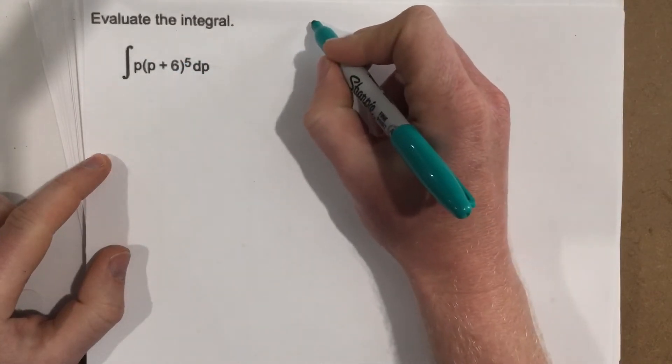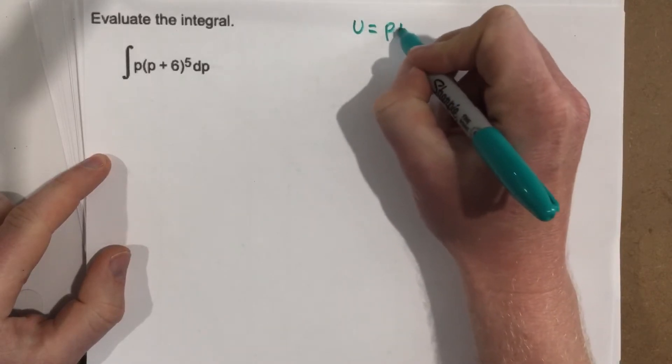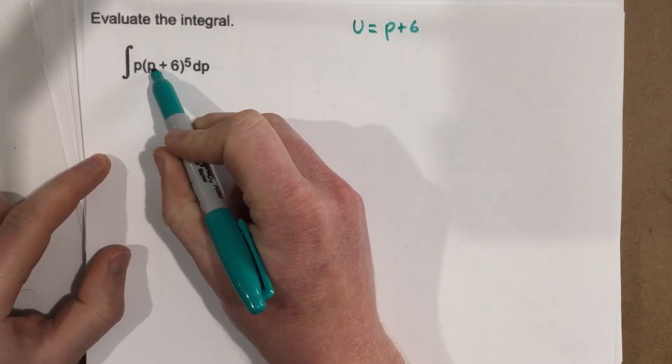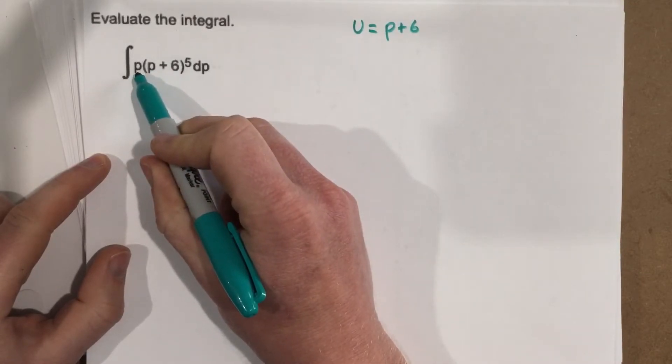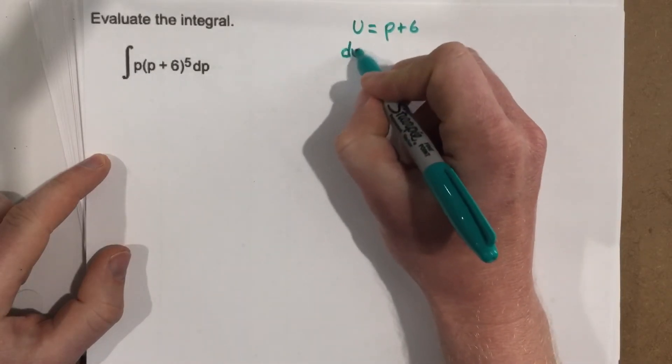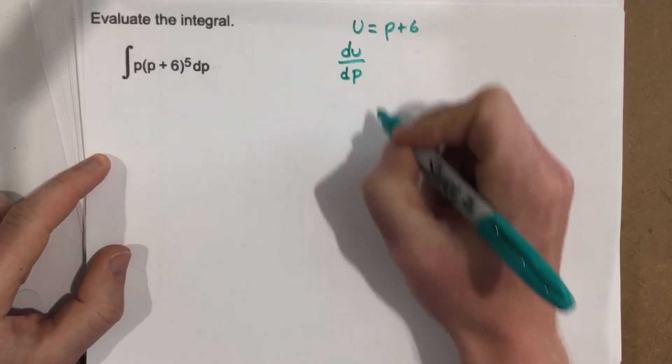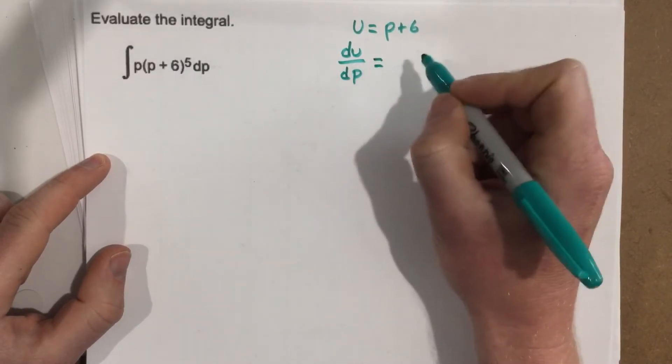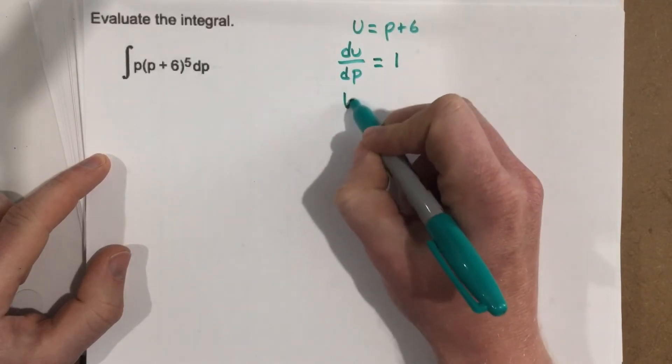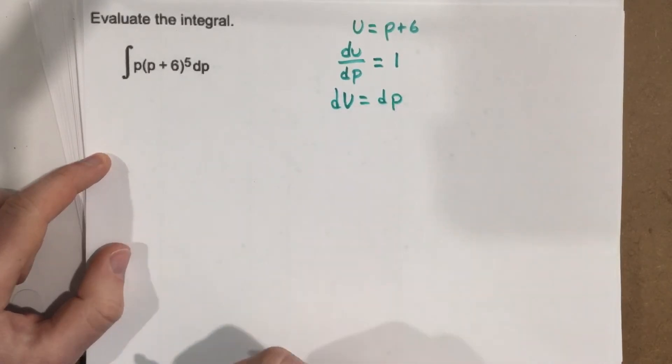So I'm going to start with u equals p plus 6. When I look at this, I know if I take the derivative of p, I'm going to get 1, which is not going to cancel this p. But we've got a way around this. Let's follow the process. du over dp, and now I've got to say dp instead of dx because we have p's in this equation. So du over dp of this is 1. I multiply, that means du equals dp.